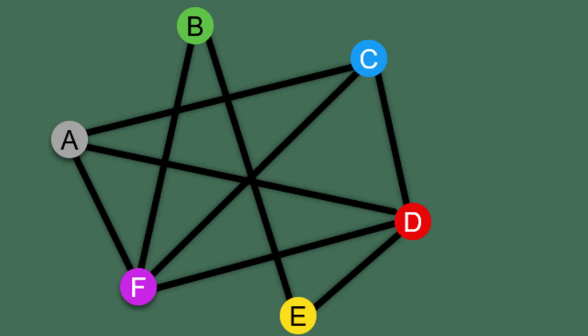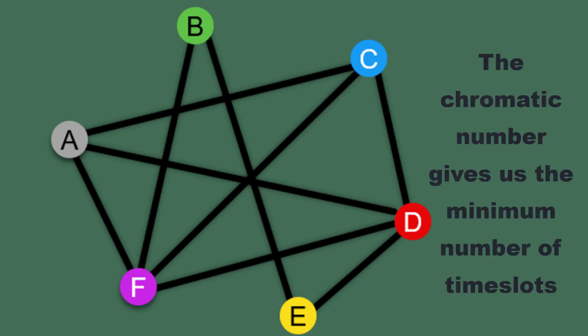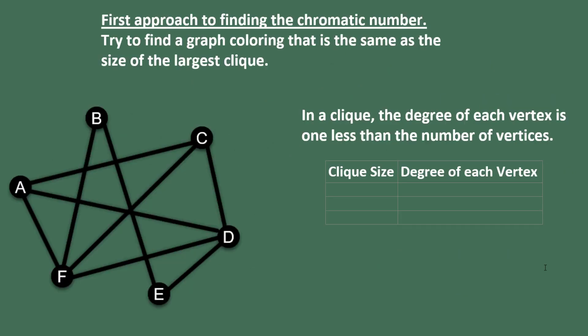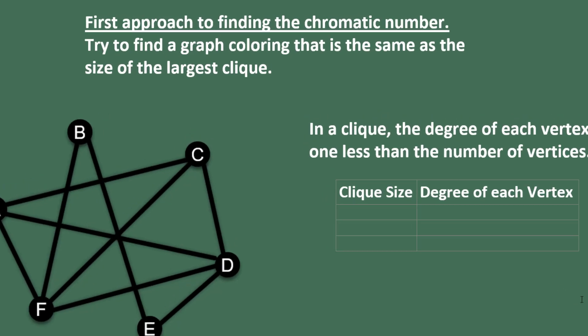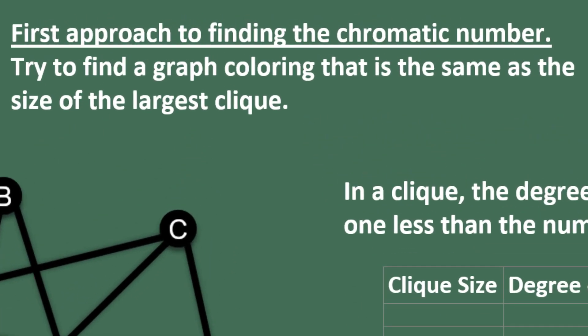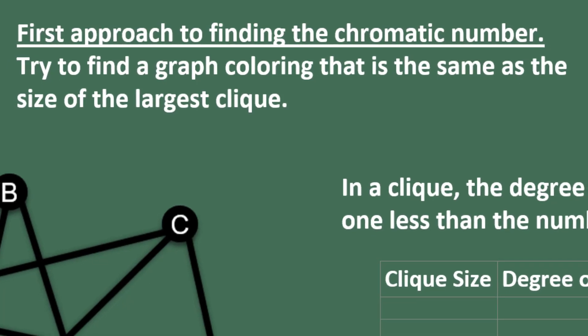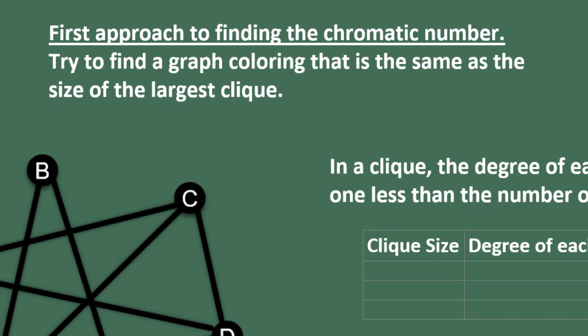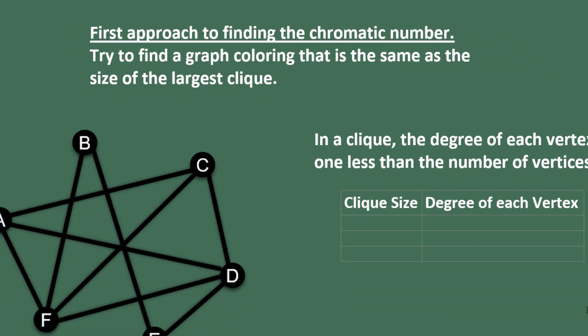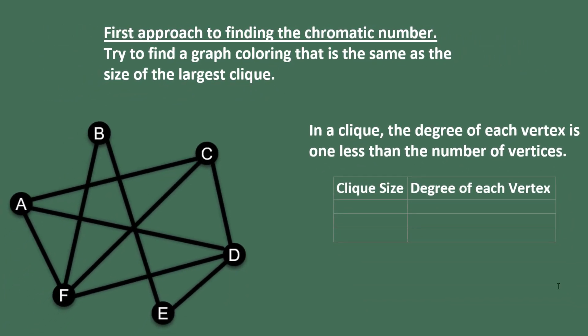Six time slots would work, but we want the least number. By finding the chromatic number, we'll find the minimum number of time slots needed. We're going to use two different approaches. The first approach is to find the chromatic number by trying to find a graph coloring that's the same size as the largest clique. We know a graph coloring has to be at least the size of the largest clique, and if we can find one that's exactly that size, then we know that's the chromatic number. By identifying the degrees of the vertices, we can help narrow down where we might have a clique.